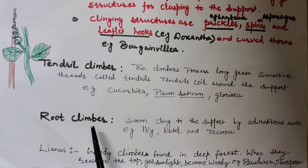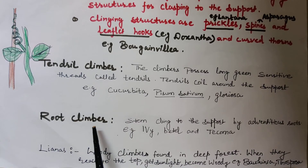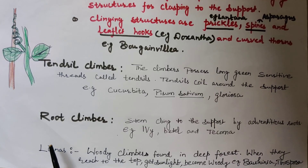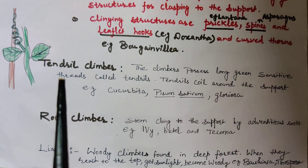The next category is root climbers — stems that cling to support by adventitious roots. Examples are ivy, Tecoma, and Pothos. Then there are lianas, which are woody climbers found in deep forests. When they reach the top they get sunlight and become woody. Examples of lianas are Begonia, Ficus, Bauhinia, and Tinospora. Tinospora was already discussed in the context of roots. These are the climbers: tendril climbers, root climbers, lianas, and scramblers or ramblers.